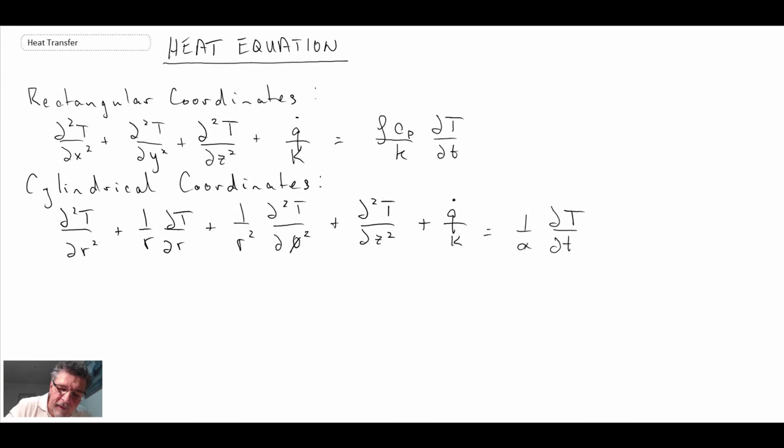So there is the heat diffusion equation expressed in cylindrical coordinates. What I have done here is introduced a new symbol, one that we will find quite often with transient conduction, and that is the thermal diffusivity.